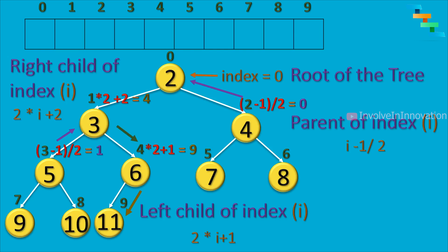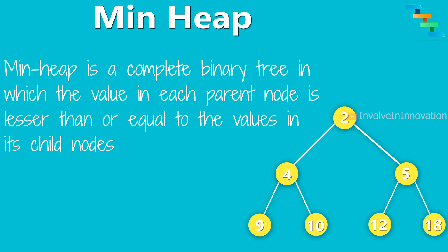The height of a complete binary tree is log n. By definition there are two kinds of heap: min heap and max heap. First we will see about min heap.